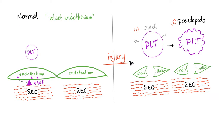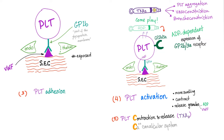In a quick review of primary hemostasis: here is normal, intact endothelium — subendothelial collagen is not exposed. Then an injury happens, the endothelium is damaged and injured, the subendothelial collagen is exposed. Platelets will start to swell and form pseudopods so that they can adhere or roll over and adhere. Platelet adhesion thanks to GP1B and von Willebrand factor, which is produced from the endothelium and the platelet. Then platelet activation — more swelling, they contract and release granules via the calcium canalicular system, releasing ADP, von Willebrand factor, and thromboxane A2. ADP helps express the GP2B3A receptor and conformational change activation. Thromboxane A2 helps with platelet aggregation, vasoconstriction, and bronchoconstriction.